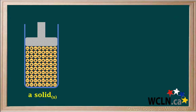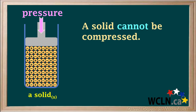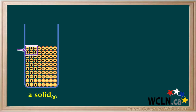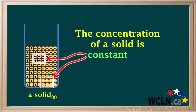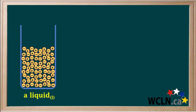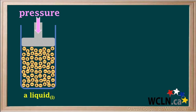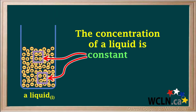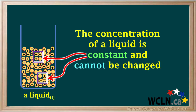Now we'll look at our model for a solid. The particles are arranged in a regular crystal lattice and are already as tightly packed as they can be. So even if we apply pressure to a solid, it cannot be compressed. No matter where we move a given volume within the solid, it always holds the same number of particles. So the concentration of a solid is constant and cannot be changed. For a liquid, the particles are not in a regular crystal lattice, but they're still packed very tightly. Even if we apply pressure to a liquid, the amount we can compress it is negligible. So the concentration of a liquid is also constant and cannot be changed.